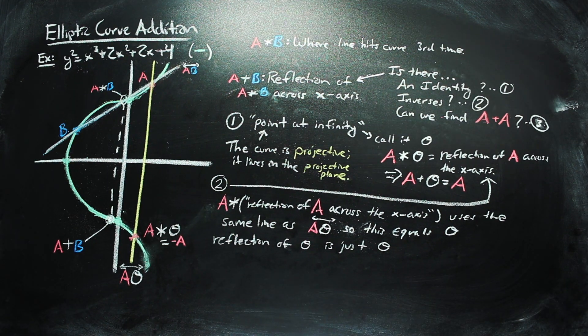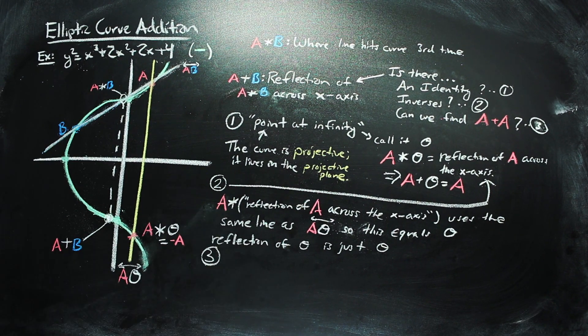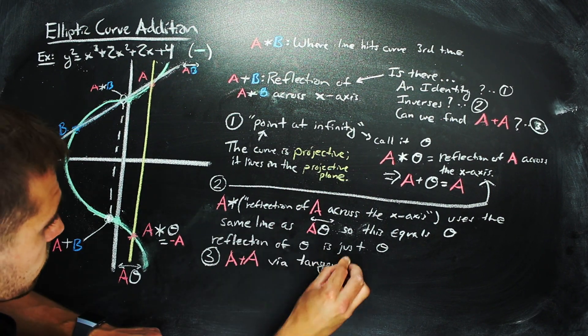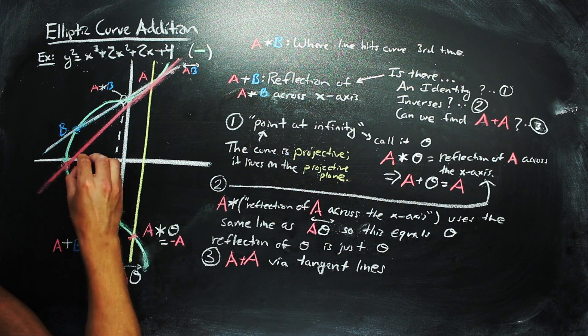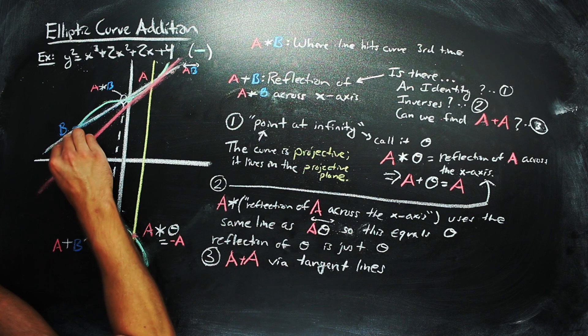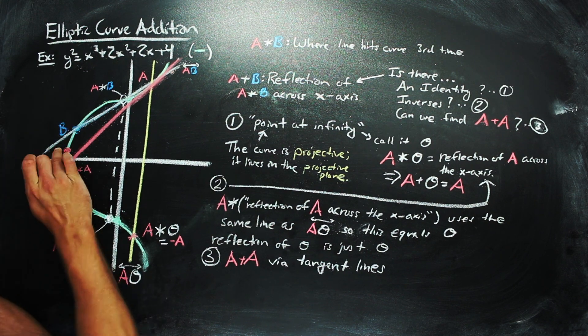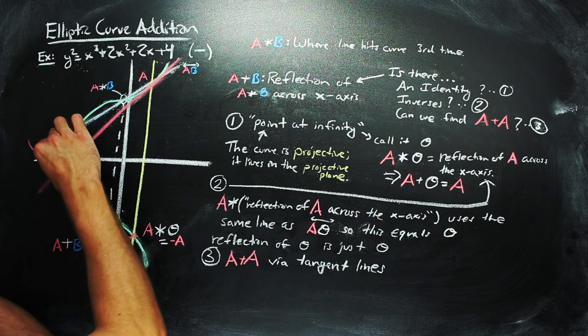Lastly, for adding a point to itself, or doubling a point, we will use the tangent line to the curve at that point, which intersects it with multiplicity 2. So, a star with itself is the third point that is hit by the tangent line. And thus, we can find a plus a.